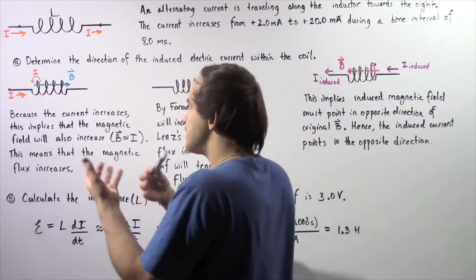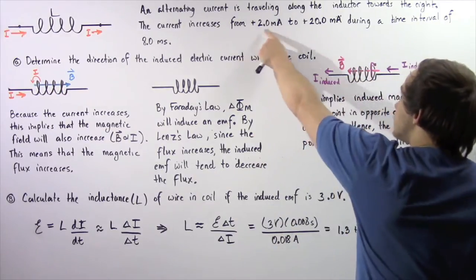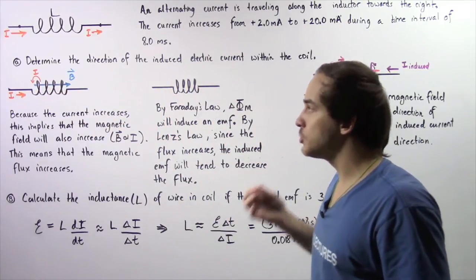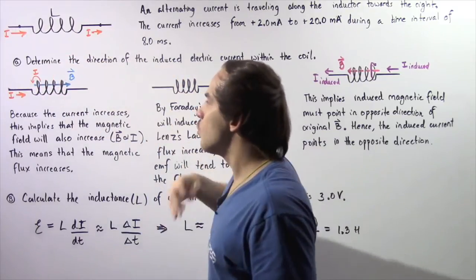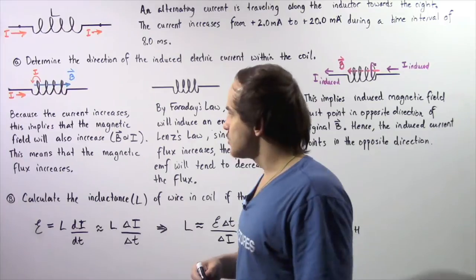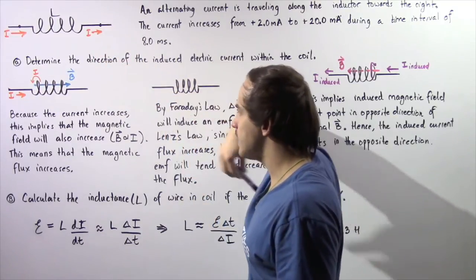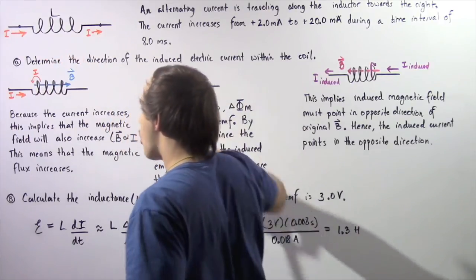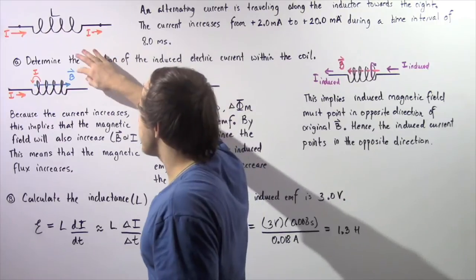Let's understand what is taking place within our inductor. An electric current is traveling within our coil and it's increasing from positive 2 to positive 20 milliamps. Because we have an increasing electric current, the magnetic field produced within our coil will also be increasing. Since magnetic field is directly proportional to the electric current I, this implies that our magnetic flux within our loop also increases.